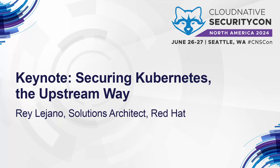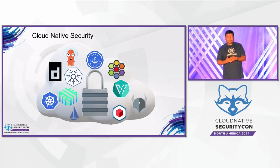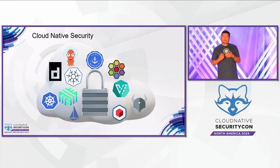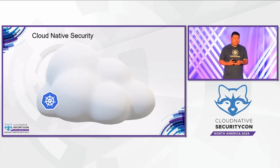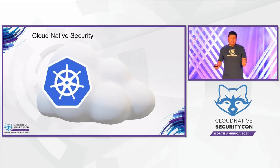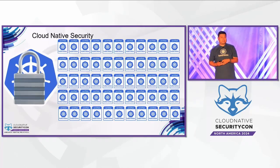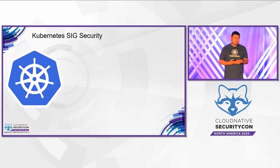Good morning and welcome. My name is Ray Lohano, and I'm here to present Securing Kubernetes the Upstream Way. We're all here because we have an interest in cloud native security, and cloud native involves many open source projects. Some projects, like Kubernetes, have many downstream distributions — over 120 distributions. So it's logical that if we improve the security posture upstream, then downstream inherits those improvements.